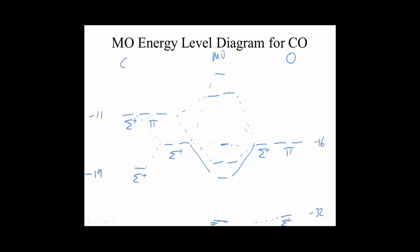We know this is the sigma non-bonding from the oxygen. This is sigma bonding from the sp hybrid, this is the pi bonding, this is another sigma non-bonding, pi antibonding, and sigma antibonding.